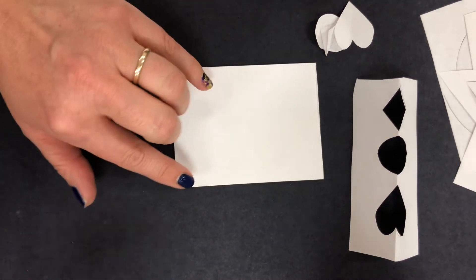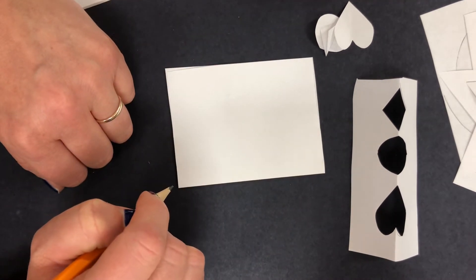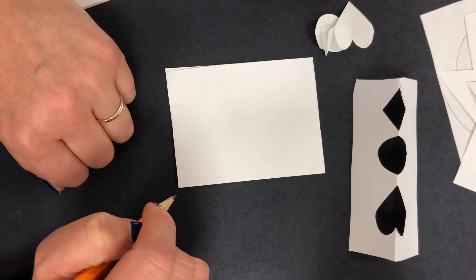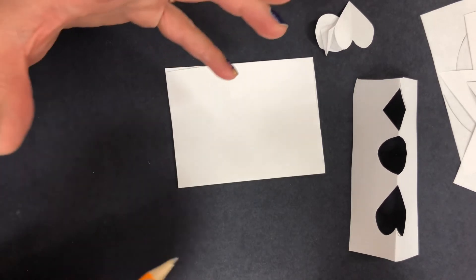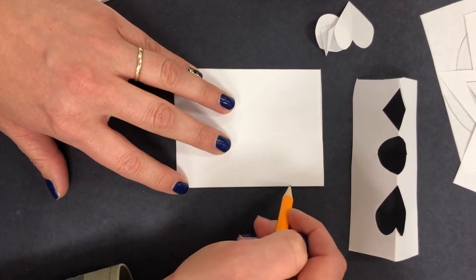Alright, so whatever you're going to cut out, you want to imagine half of it. So if I wanted to cut out a cat, the head of a cat because I love kitty cats, I would draw half of the cat's face.